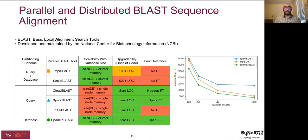MPI BLAST — the most scalable parallel BLAST tool to date — implements query plus database partitioning with dynamic scheduling for scalability, but lacks upgradability and fault tolerance. Spark BLAST is one of the most recently developed tools that is highly upgradable by building a Spark wrapper around NCBI BLAST code and is also fault tolerant, but not scalable with databases that do not fit in a single node's memory. Sparkle BLAST outperforms both MPI BLAST and Spark BLAST for scalability up to 1,000 cores.